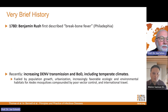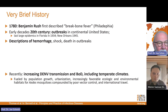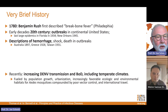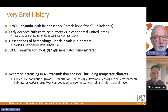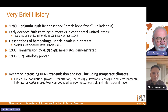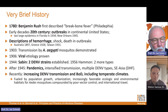The disease was probably first described by Benjamin Rush in the late 1700s. There have been outbreaks in the 20th century in the continental United States. The description of hemorrhagic shock with dengue virus was in Australia, Greece, and Taiwan. Transmission of the virus by Aedes mosquitoes was shown early in the 20th century. The viral etiology was proven in 1906, and since 1942 we know there are at least two strains, and after 1945 we have seen pandemics.